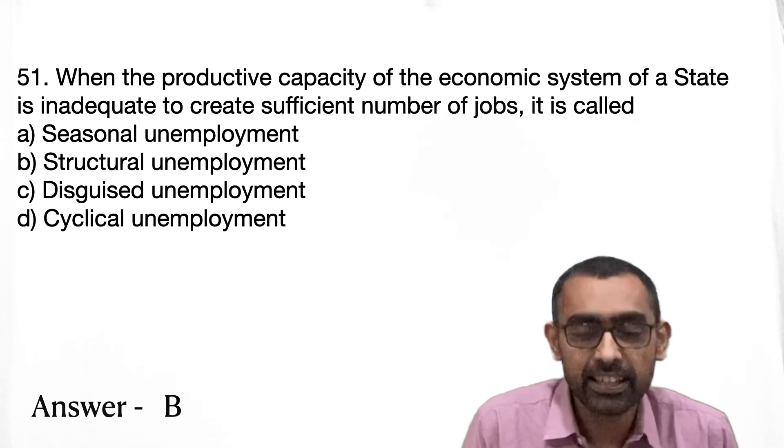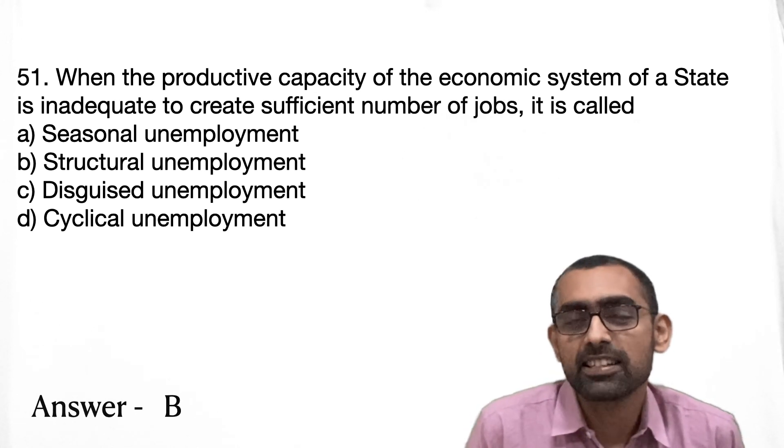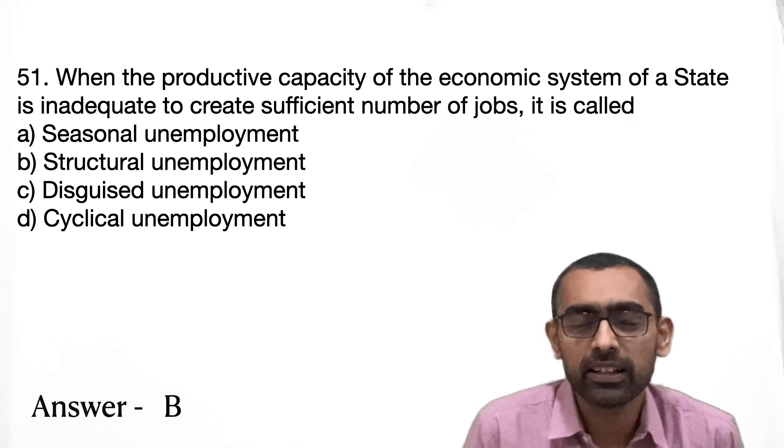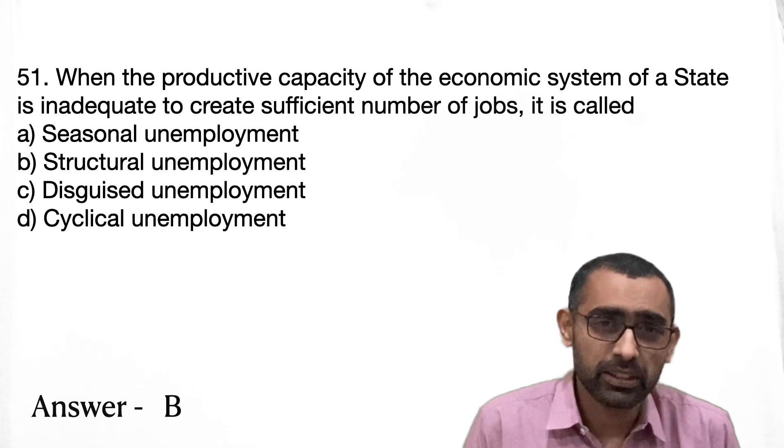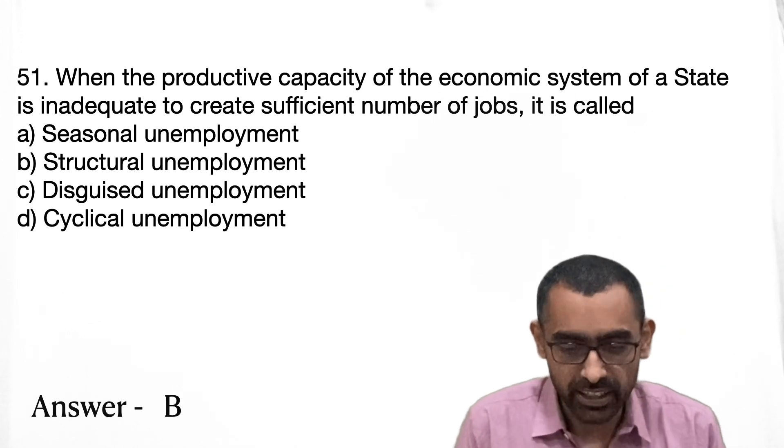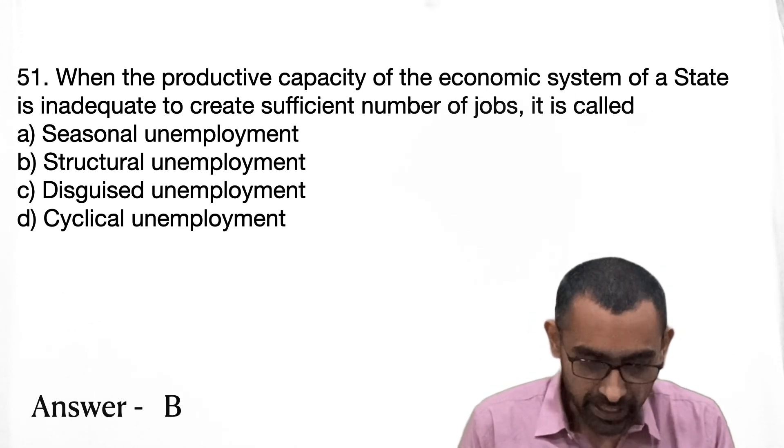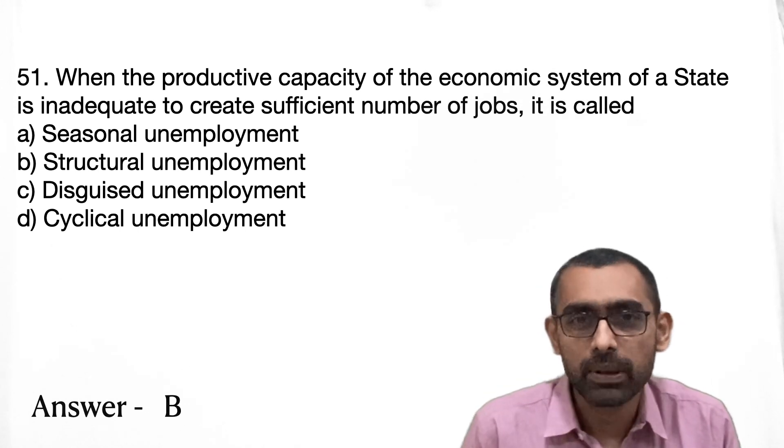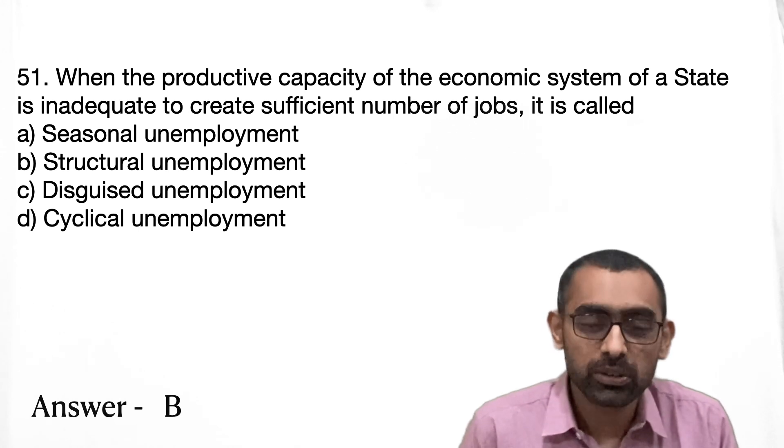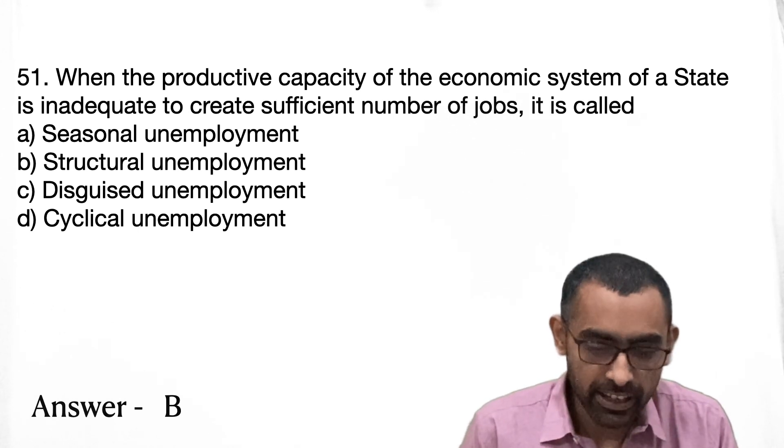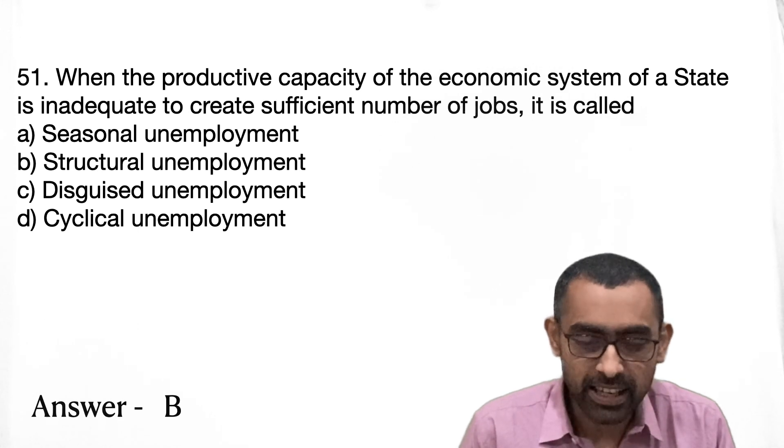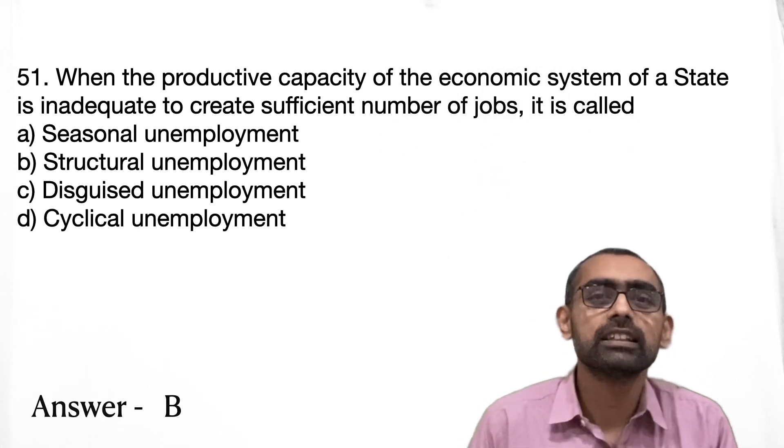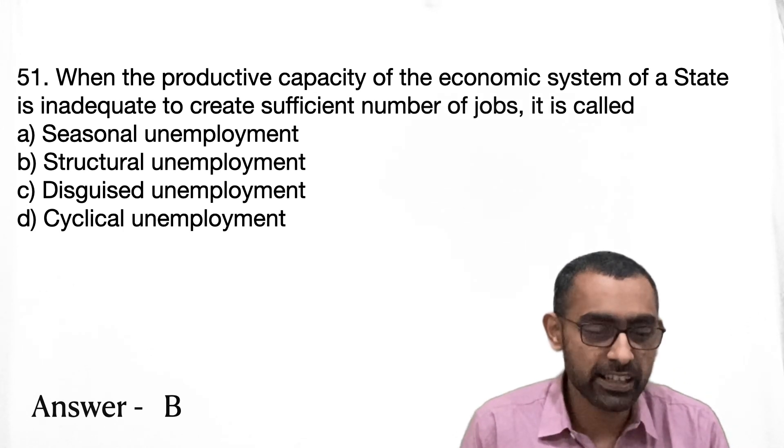Then disguised unemployment is basically there is a certain amount of work which is actually only for 2-3 people, but 10 people are working on it. So that shows that the requirement is only of 2, but there are additional people being shown. They are working maybe on paper but actual requirement is not there. Cyclical unemployment basically happens in certain cycles, it's kind of similar to seasonal employment.